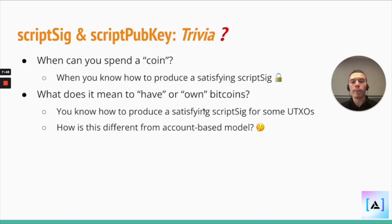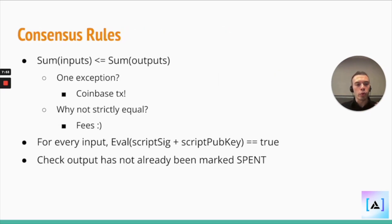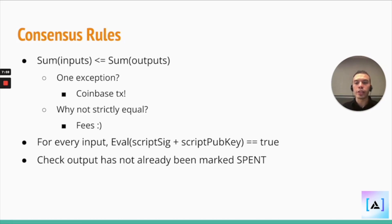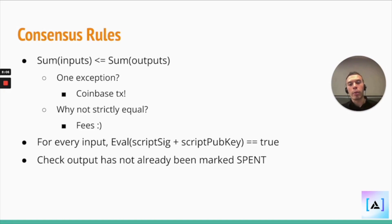So just some quick consensus rules summary for UTXOs, because you're going to actually look at this in one of the coding challenges: the sum of your inputs for constructing a transaction must be less than or equal to your outputs. You can't spend more than you own.